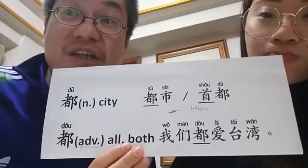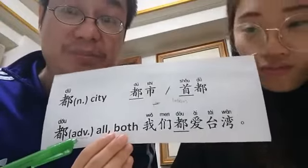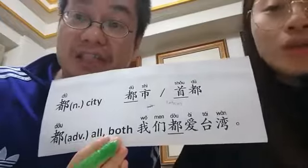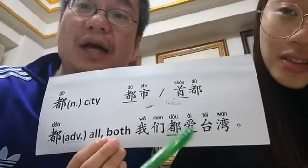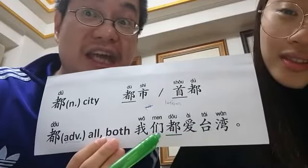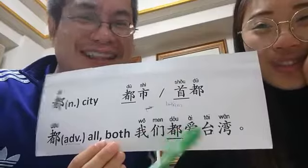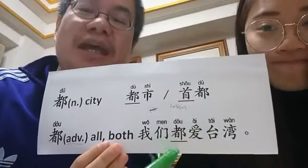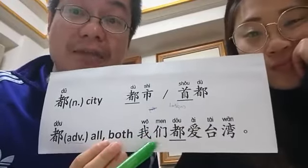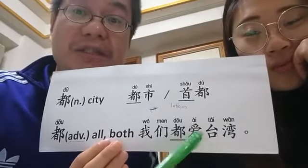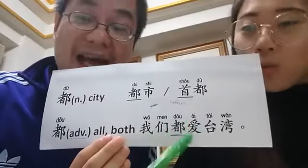The other pronunciation of the same character is 都 (dōu), which is an adverb meaning all or both. For example: 我们都爱台湾 — 我们 means we, 都 means all, 爱 means love, so it means we all love Taiwan. Don't say 我们都 (dū) 爱台湾, that's so weird — it should be 我们都 (dōu) 爱台湾.